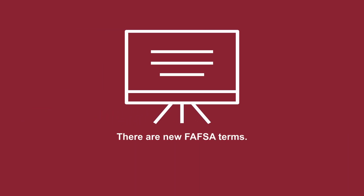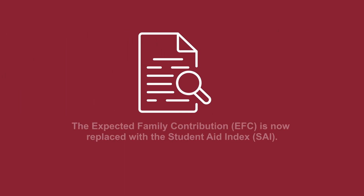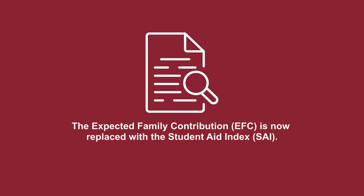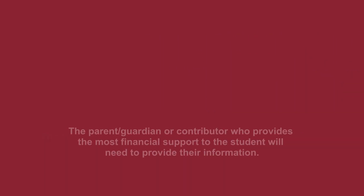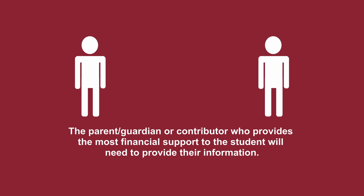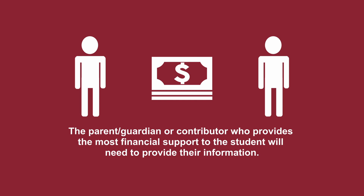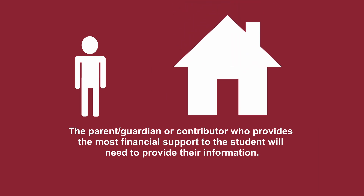If you've completed a FAFSA before, you'll notice that there are some new terms. For example, the expected family contribution is now replaced with the Student Aid Index. The Student Aid Index is calculated by FAFSA data and determines student aid eligibility. Another significant change is that for divorced or separated parents, the parent who provided the most financial support to the student will need to provide their information — previously, the parent who the student lived with the most provided their information.